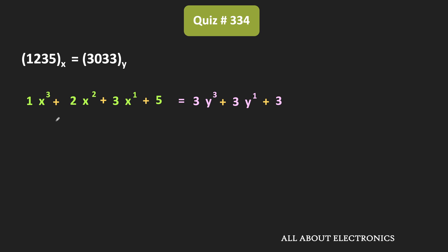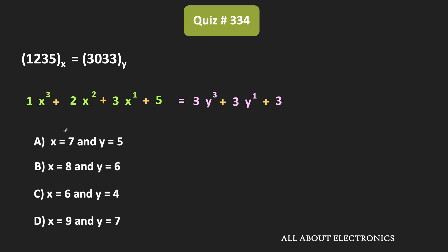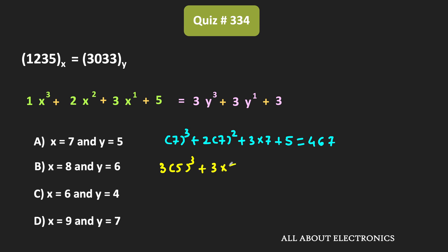To find the value of x and y, we can put the values given in the four options. First, let us put x equal to 7 and y equal to 5. When we put x equal to 7, we get 7³ plus 2 times 7² plus 3 times 7 plus 5, which equals 467. Similarly, putting y equal to 5, we get 3 times 5³ plus 3 times 5 plus 3, which equals 393. Since these two numbers are not equal, option A is not the answer.